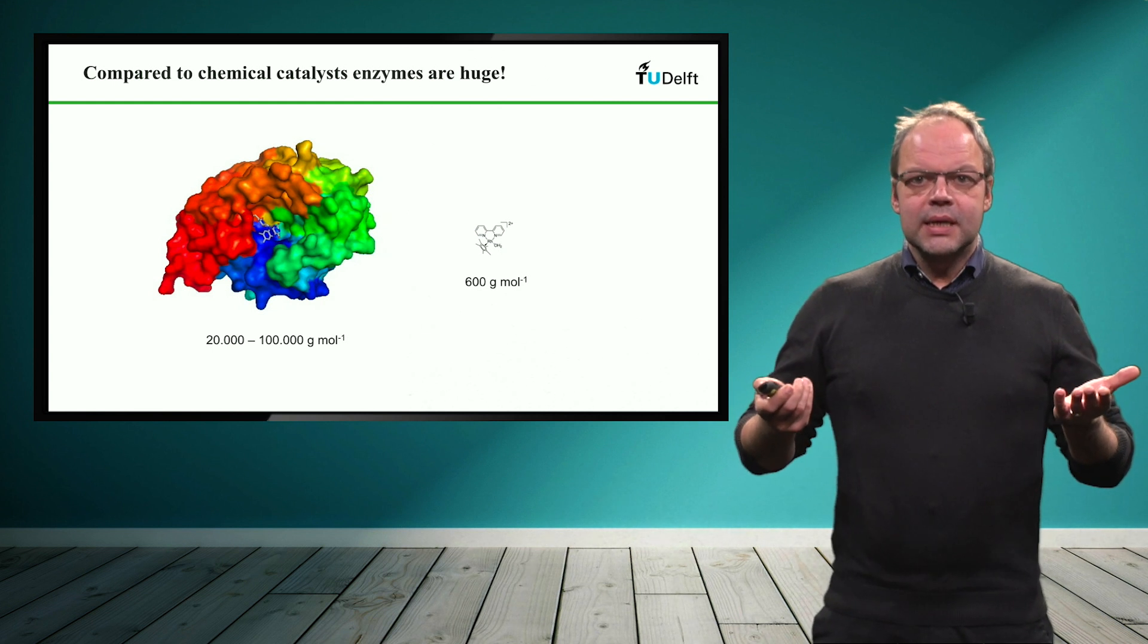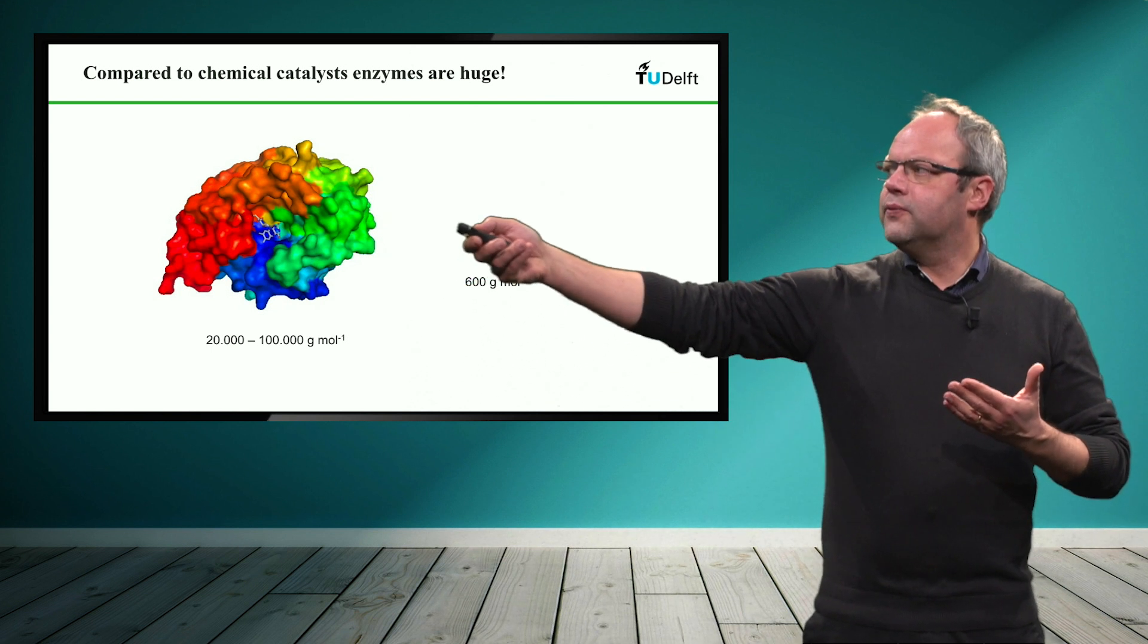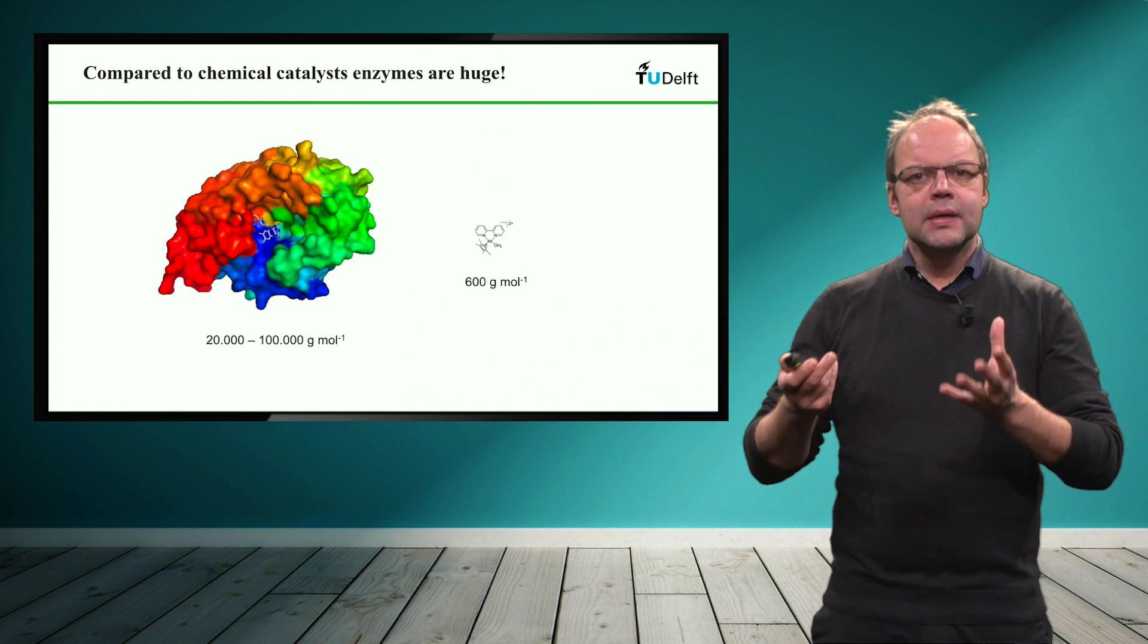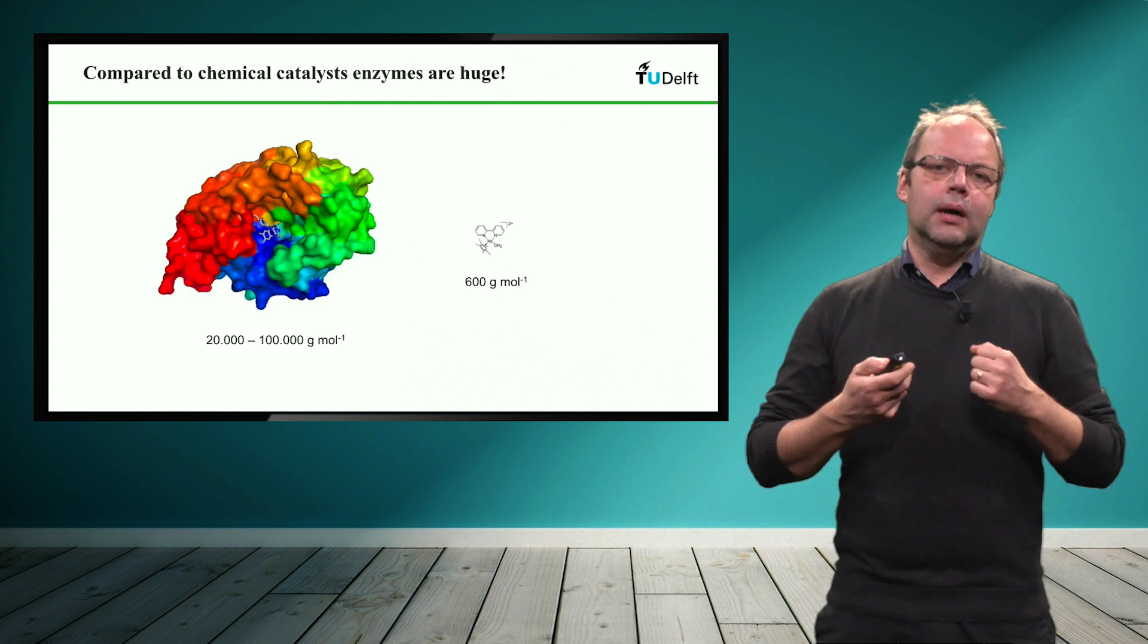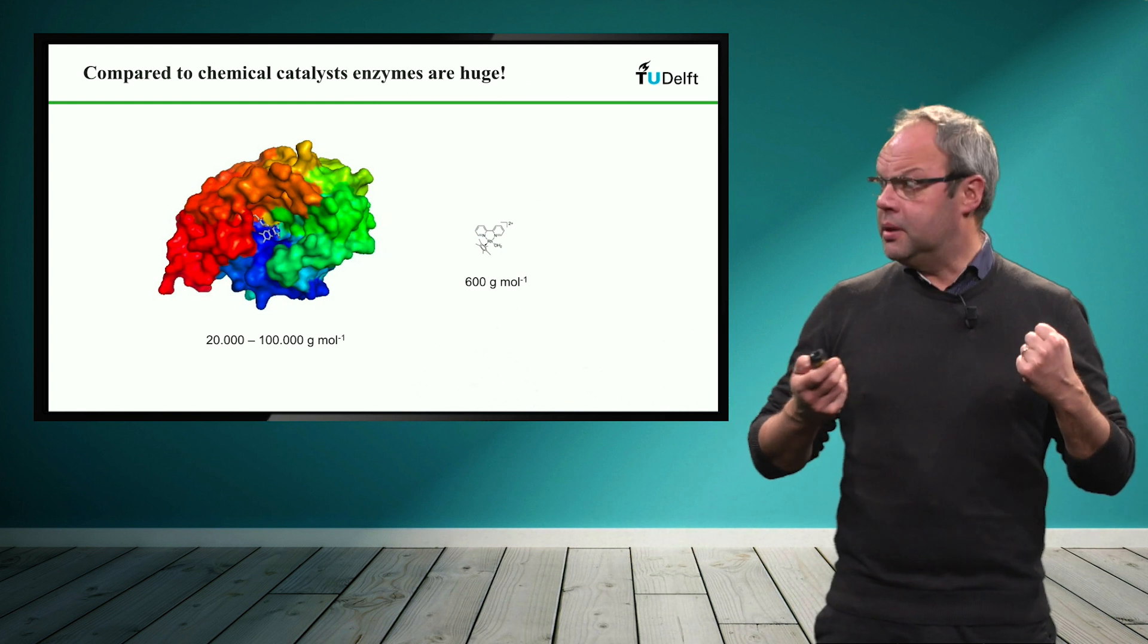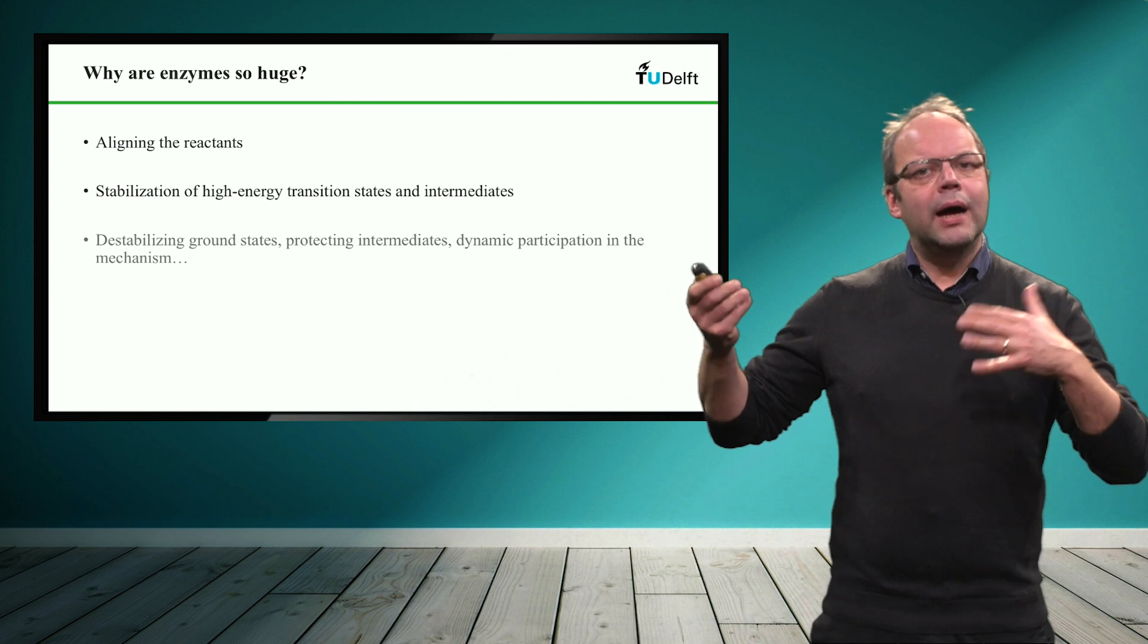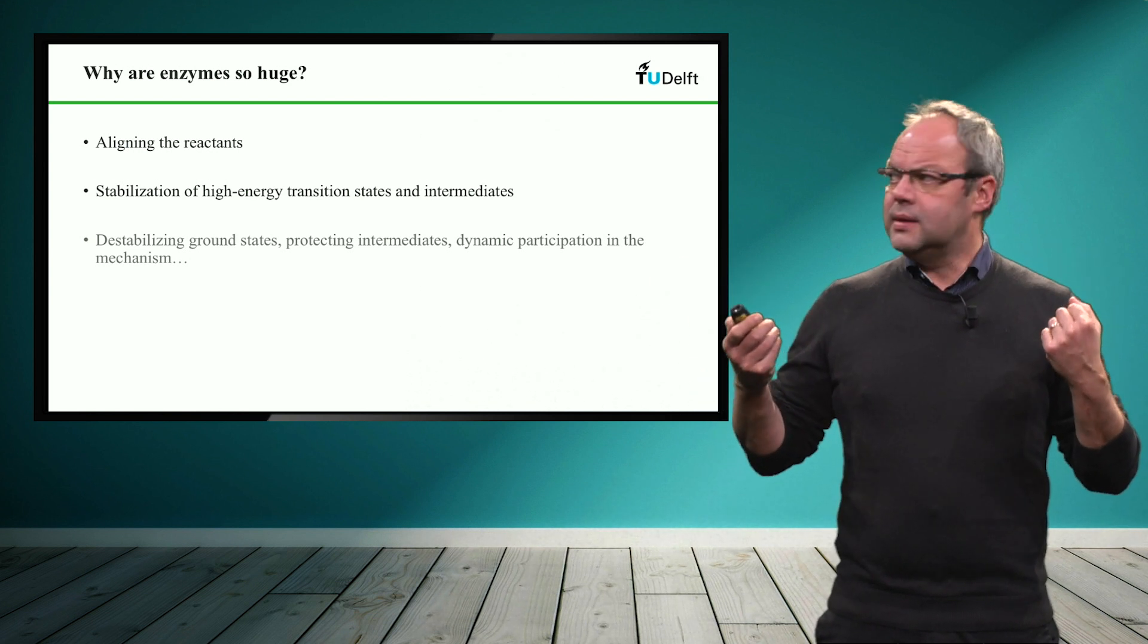Well the answer to this is, it is the three-dimensional structure. It is the very well-defined three-dimensional structure of an enzyme that in the end builds up the enzyme active site and brings up the reagents and the substrates together to form the catalytic active site and make the reaction happen. So there are many factors that actually influence or are influenced by the structure of the enzyme for the catalytic properties.